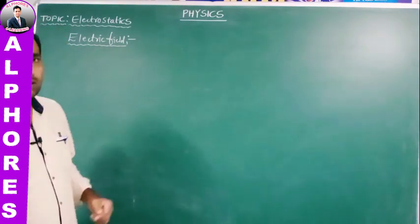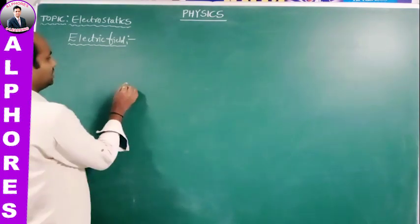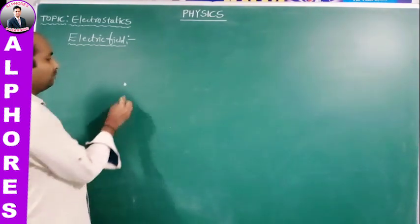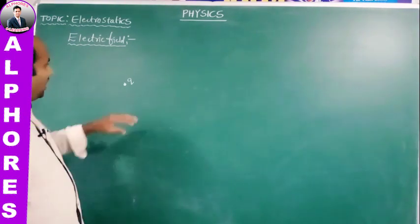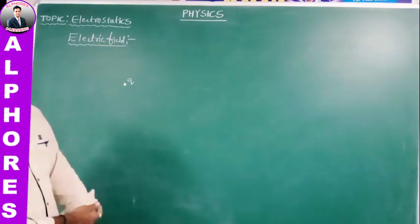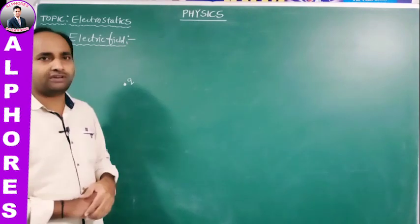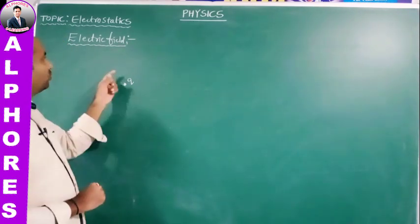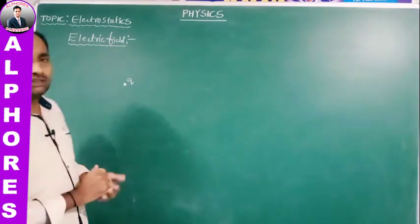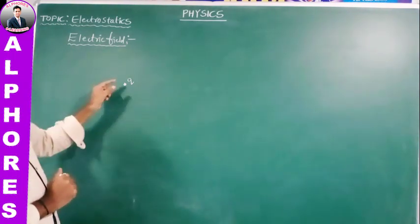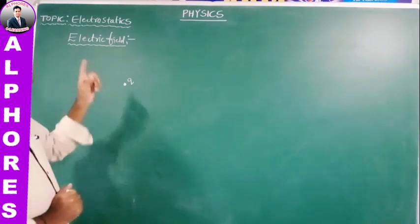A stationary charge can produce an electric field. For example, if we place a charge at any point in free space, around this charged particle, up to some extent the field is modified. The electric field can be defined as the space around the charged particle up to which its influence is felt.